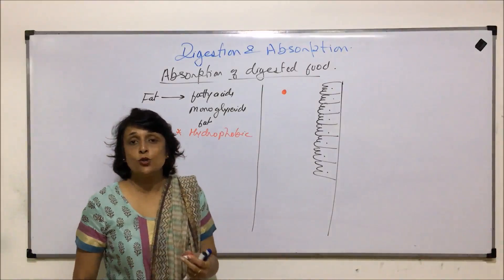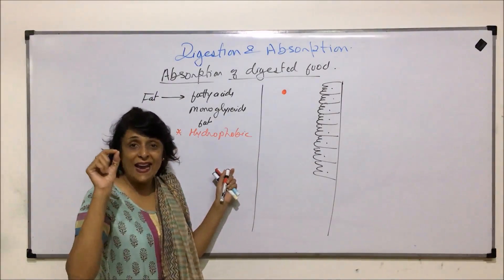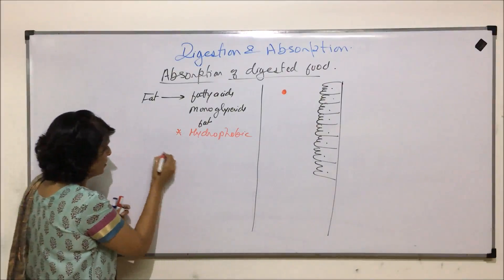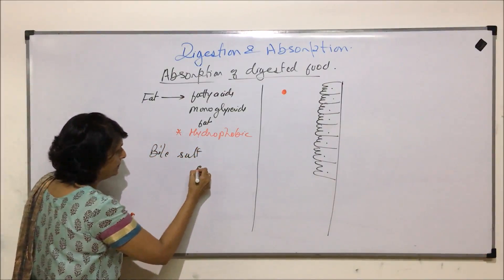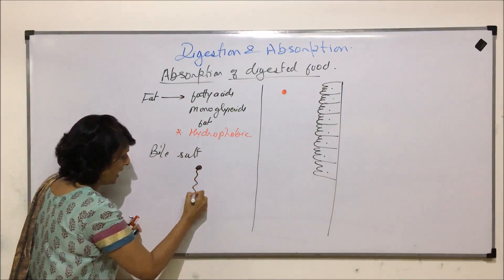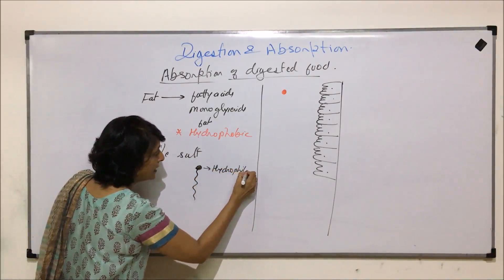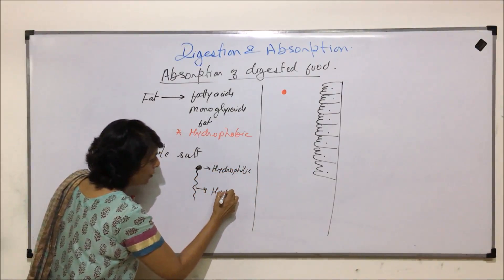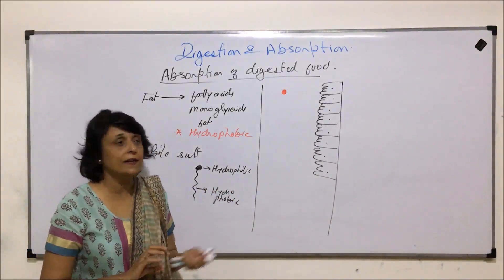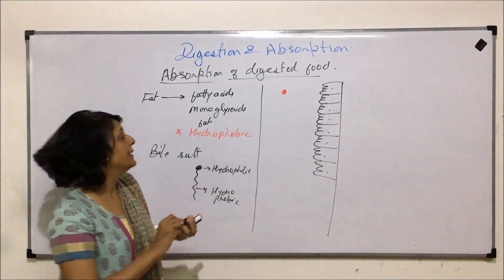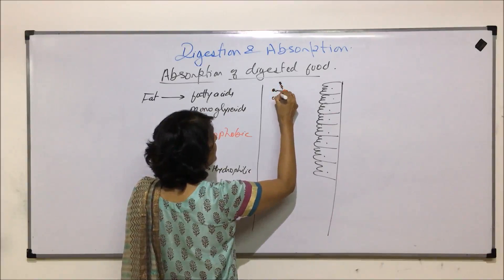Bile salts surround them in such a manner. The bile salt has a structure with a hydrophobic tail and a hydrophilic head. So the salts arrange around these particles so that their heads are pointed on the outer side and the tails are pointed on the inner side.